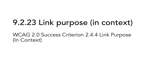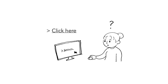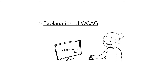9.2.23 Link Purpose in Context is based on WCAG 2.0 Success Criterion 2.4.4 Link Purpose in Context. This criterion states that a user should be able to understand where a link leads to, either from the link text alone or from the link text and the context of the link. If the link is situated beneath a heading, the link text and heading together should be understandable. Aim to describe the link purpose in the link text alone, so that the surrounding content is not needed to understand where the link will lead. This will make it easier for screen reader users that jump from link to link without getting the context, and it will make it easier for search engines to understand what types of information different pages contain. If that is not possible, then the link should at least be understandable in its context.